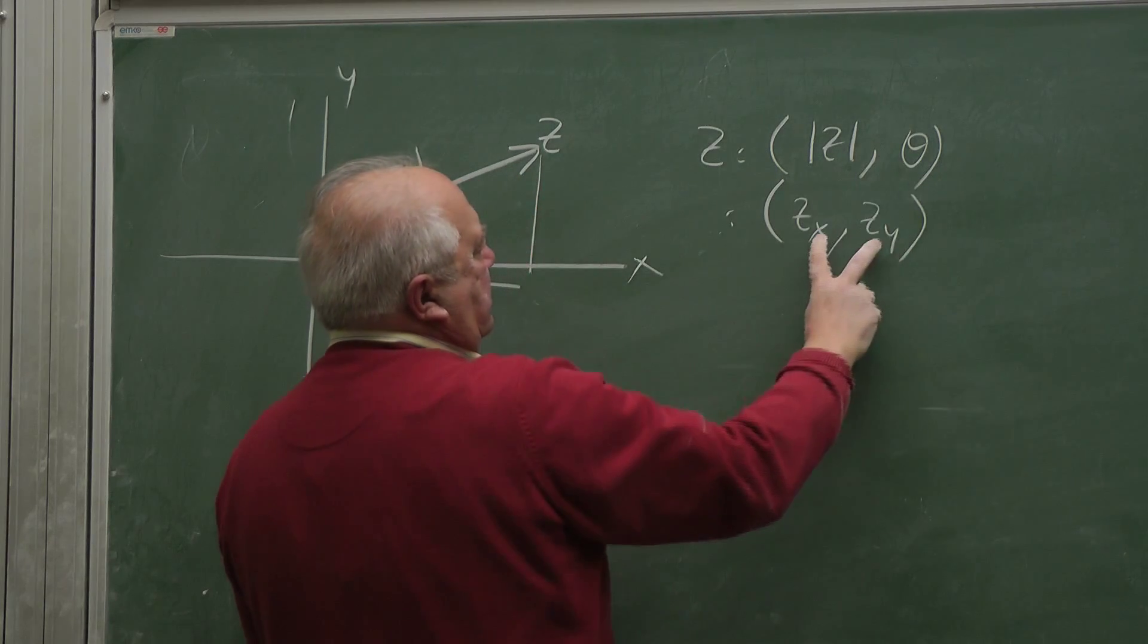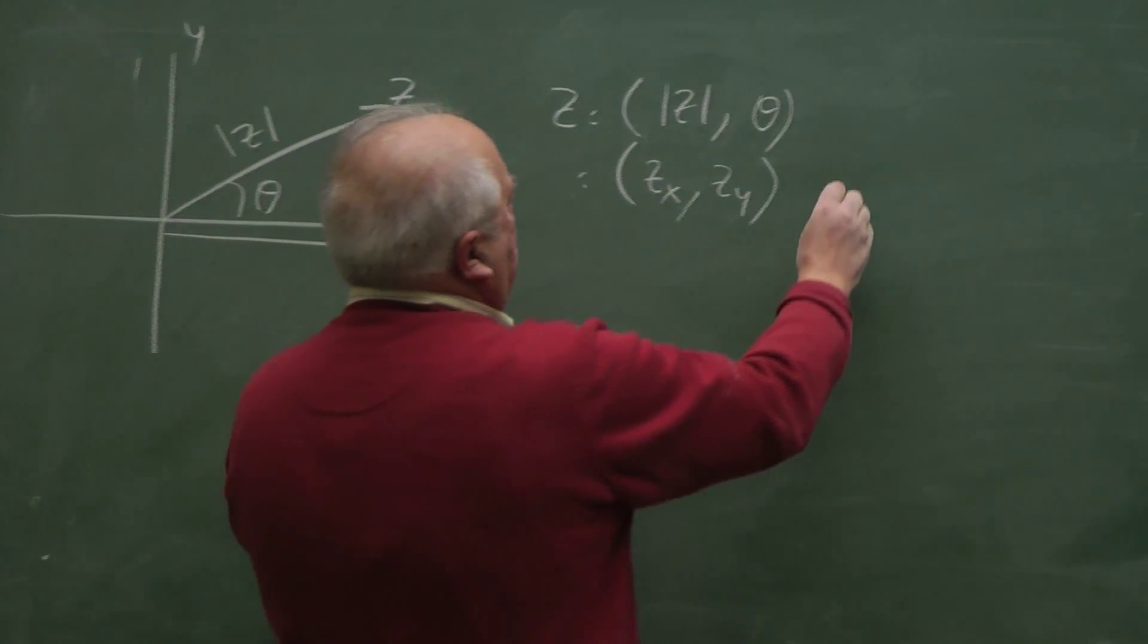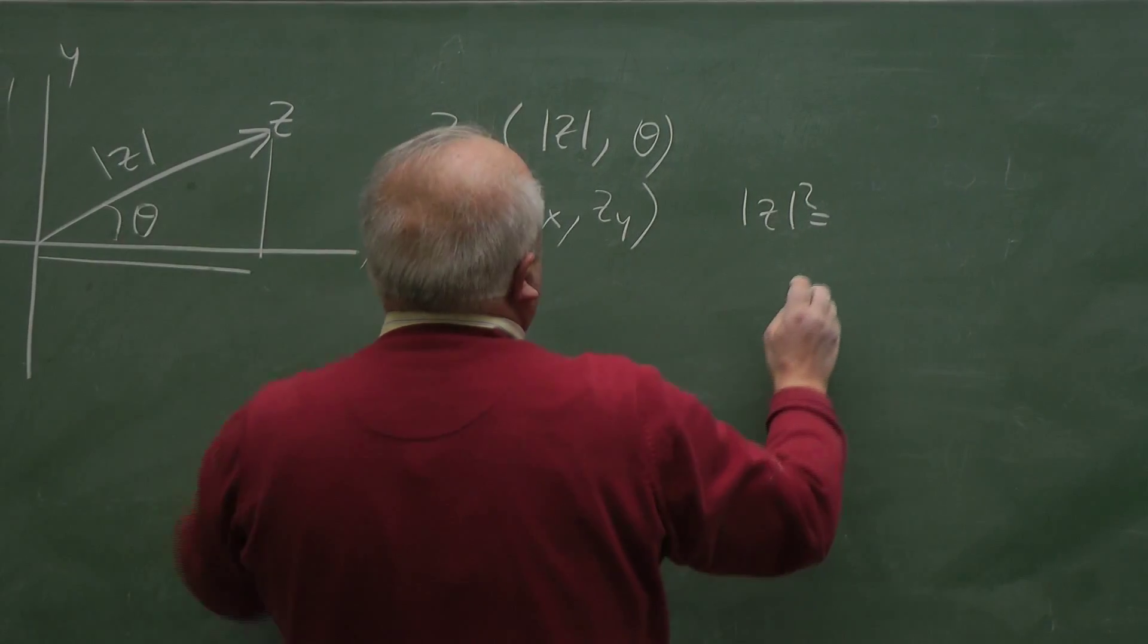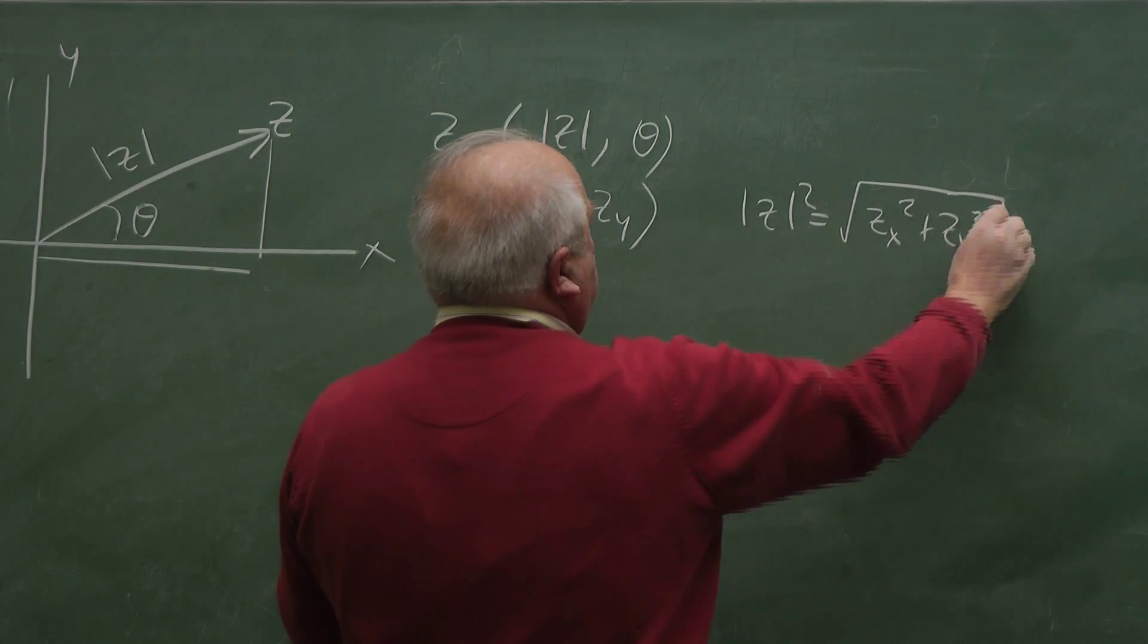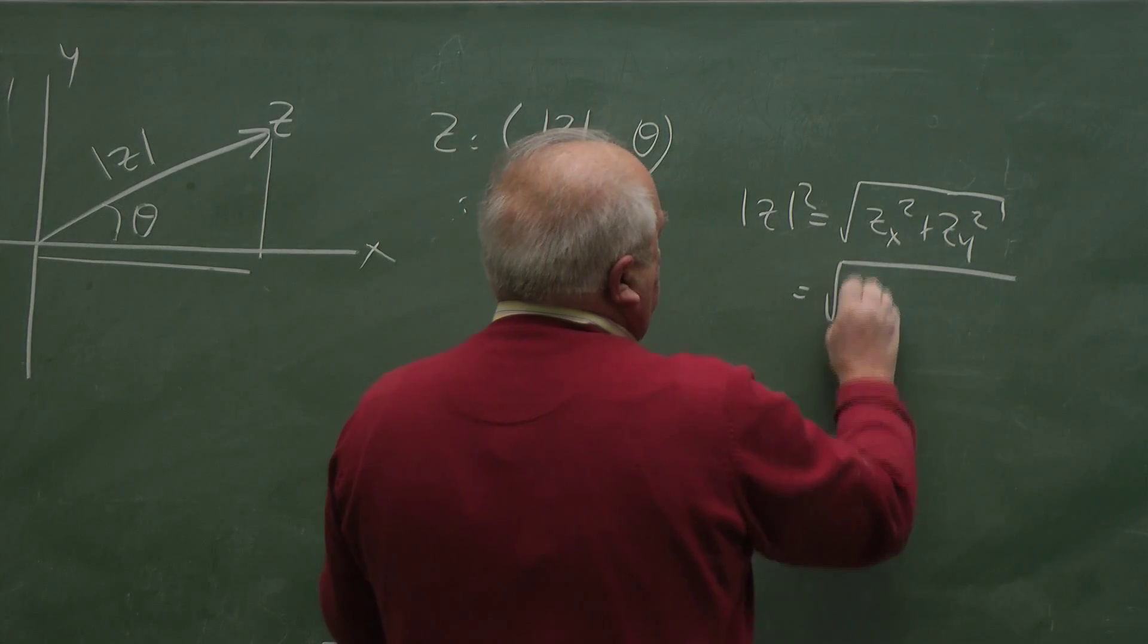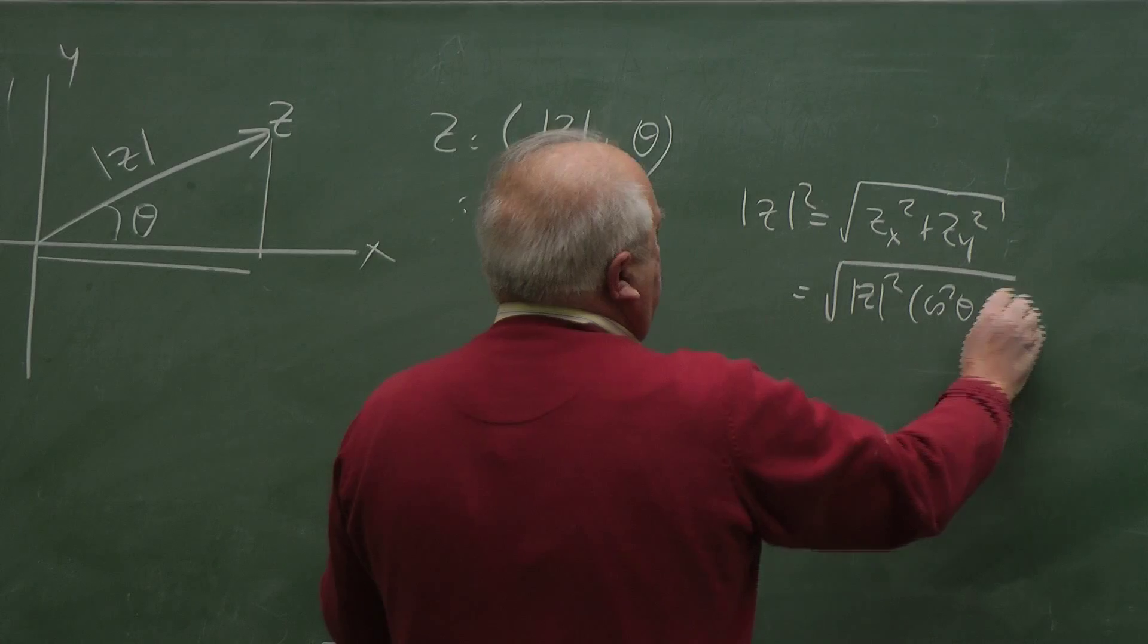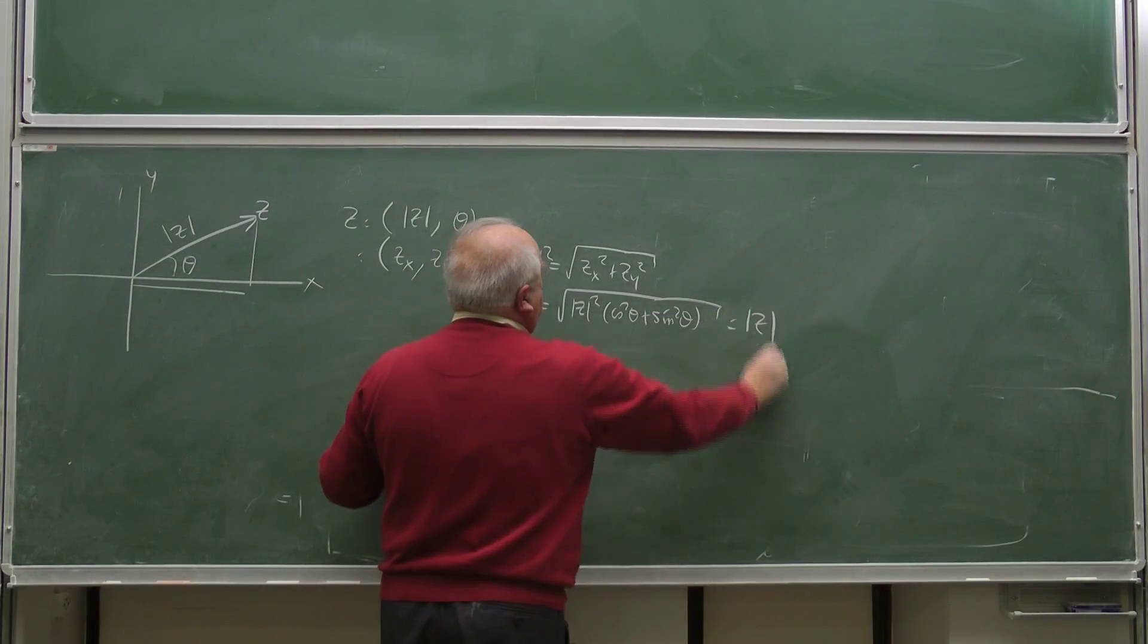This is the polar representation. This is the Cartesian representation. It's obvious that z squared, the magnitude, is zx squared plus zy squared. And zx is z cos theta, z squared equals cos squared theta plus sin squared theta.